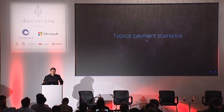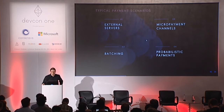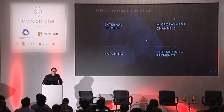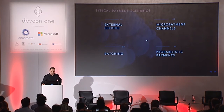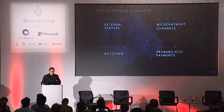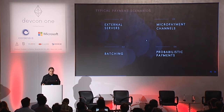So how do typical payment scenarios look? We investigated all of them. External servers would be the simplest solution but they require an external authority outside of the Golem and Ethereum networks, which is not feasible in our scenario. Batching solves the problem to some point but it's not scalable — a direct transfer costs approximately 21,000 gas right now, and batching is two to three times cheaper, but that's the limit.